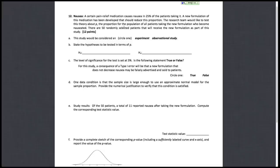Page 7 of the Fall 2011 Exam 1, Question 12, has to do with a study on nausea. Pain relief medication often causes nausea in 25 percent of the patients taking it. We have this medication that's now newly formulated, so it should reduce this proportion, and the research team would like to test this theory about p, the proportion for the population of all patients that take the new formulation who actually are nauseated.